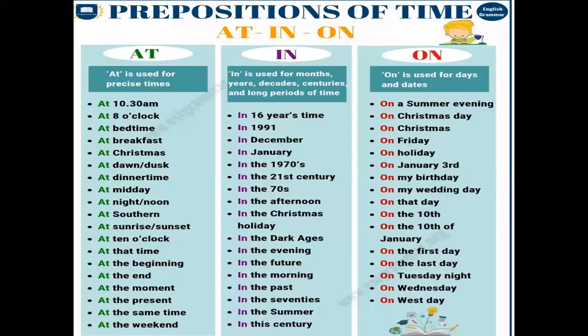You can also use 'from' and 'to' for time — showing the beginning and end of a time period. For example: 'I work from morning to evening' — morning is the beginning, evening is the end. 'The teacher taught me from 7 a.m. to 9 a.m.'